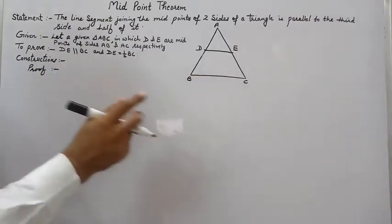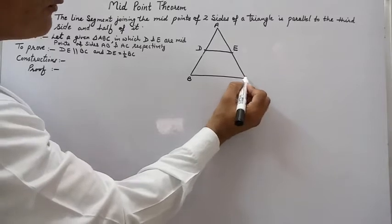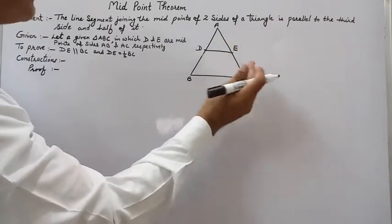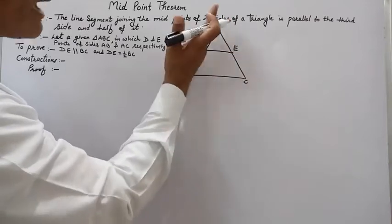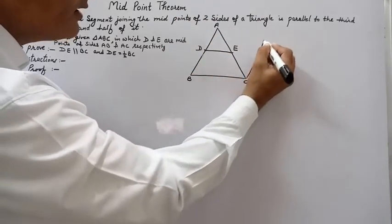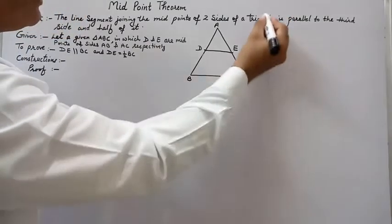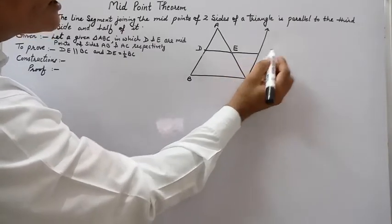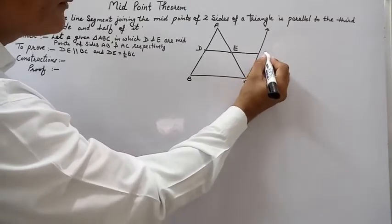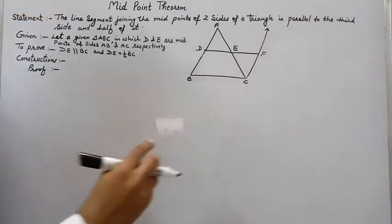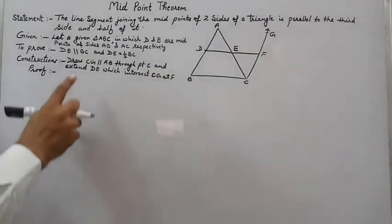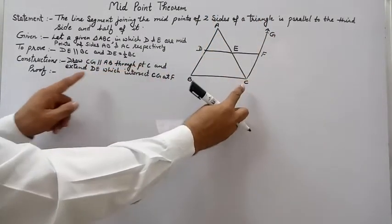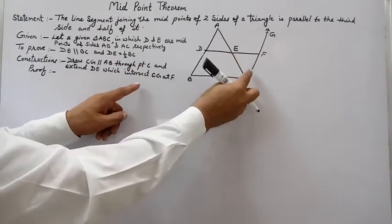We need to do one construction. We will draw a line segment parallel to side AB through point C. So from point C we draw a line segment parallel to AB, and we extend DE such that it intersects this parallel line at point F. Construction: draw CG parallel to AB through point C, and extend DE to intersect CG at point F.